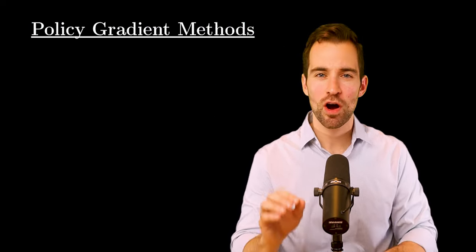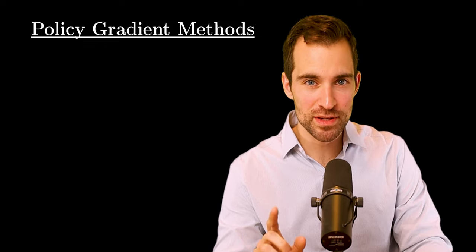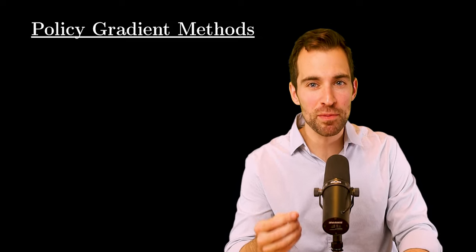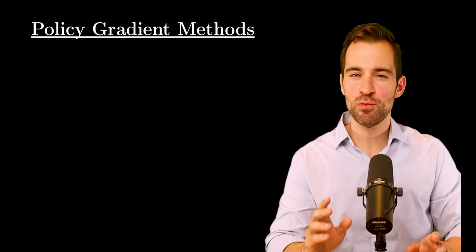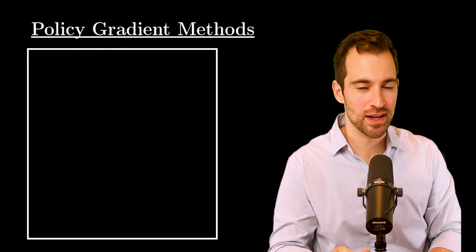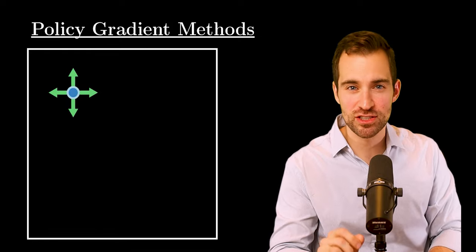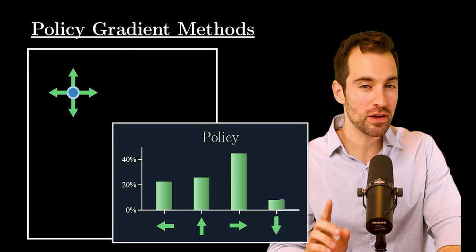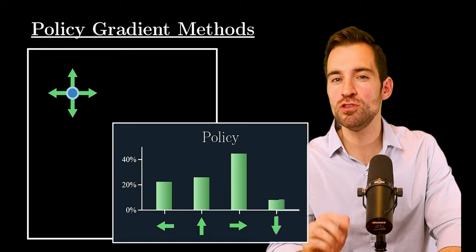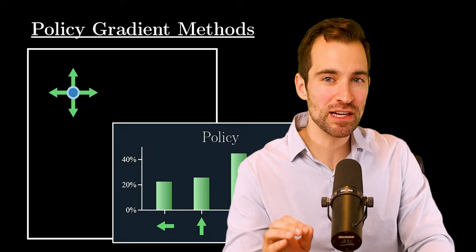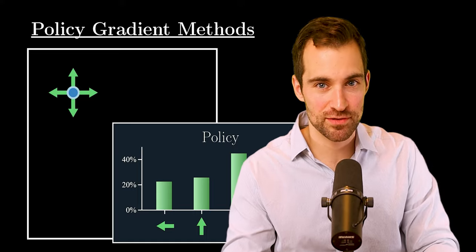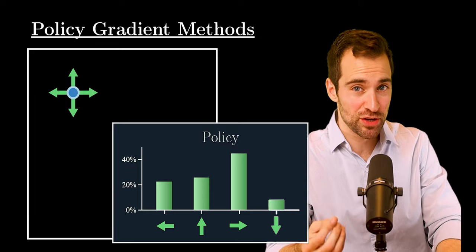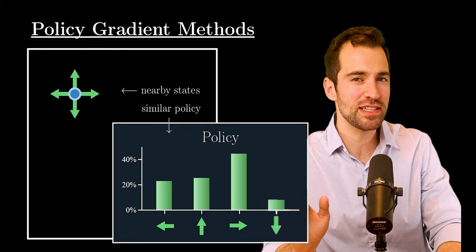As mentioned, policy gradient methods are a more direct approach to our problem. That problem is, we'd like to determine a policy that'll achieve a lot of reward. To refresh, a policy gives the probabilities of taking actions in any state. For example, if we were faced with a 2D continuous state space, and in any state, we had four actions to choose from, then the policy gives us the agent's probability of taking each action in this state. Also, as the state changes, so do the action probabilities. So to reiterate, we need to determine a policy that'll achieve high reward for whatever this environment is.